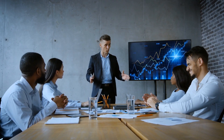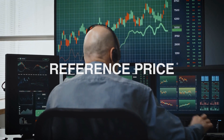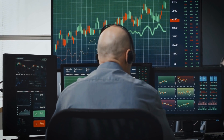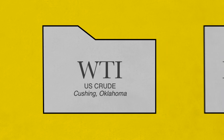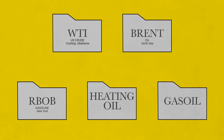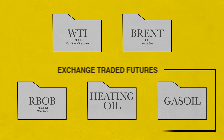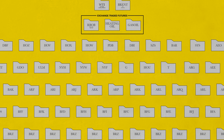It is for this reason that benchmarks were first created. Benchmarks act as a reference price for traders and market participants. Initially it began with something called the WTI contract, which referenced U.S. crude stored in Cushing, Oklahoma. Then came the Brent contract, which referenced oil in the North Sea. Next it was RBOB, or New York gasoline, heating oil, and gas oil — all of which together are known as exchange-traded futures.